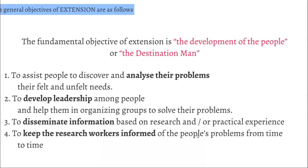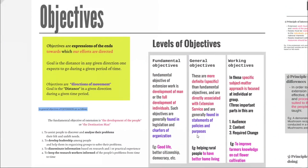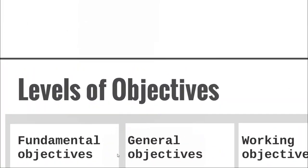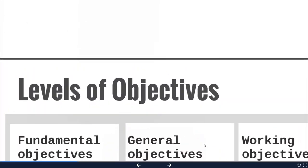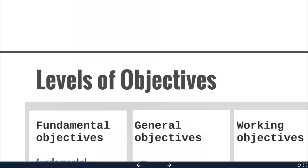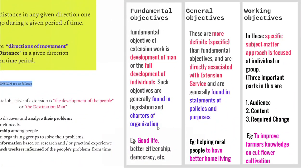Objectives can be categorized into three levels. They are fundamental objectives, general objectives, and working objectives. Fundamental objectives are very broad in terms, whereas general objectives are a little more specific than fundamental objectives. But working objectives are very much specific to the subject matter. Working objectives consider audience, content, and required change very specifically.